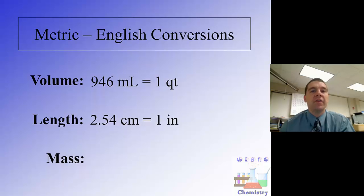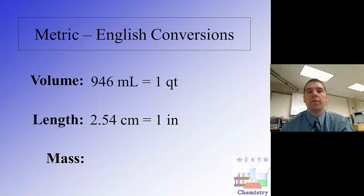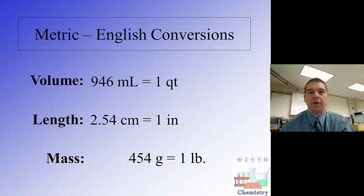In terms of distance or length, our conversion factor is 2.54 centimeters for every one inch. Think about the length of your middle knuckle — that's about an inch. If you measure it with a metric ruler, it should come out somewhere close to two and a half centimeters. The exact conversion is one inch is equivalent to 2.54 centimeters.